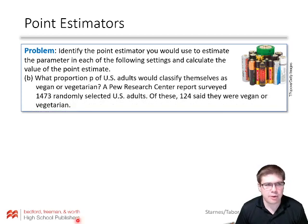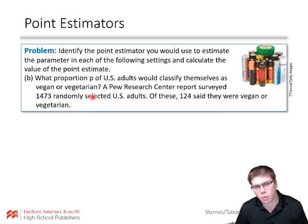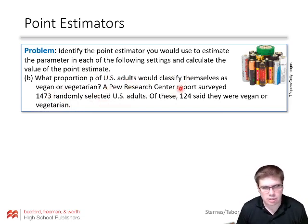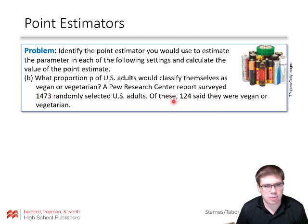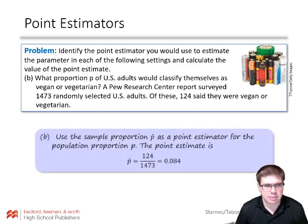What about the proportion p of U.S. adults that would classify themselves as vegan or vegetarian? They surveyed this many people and got that many who said they were vegan or vegetarian. So the point estimate in that case is p-hat, just that proportion — 124 over 1473.